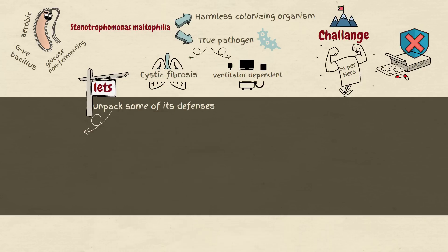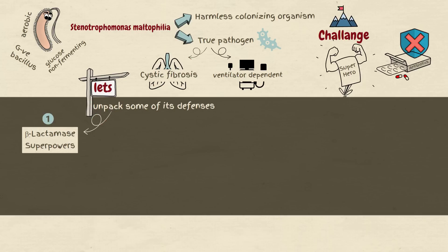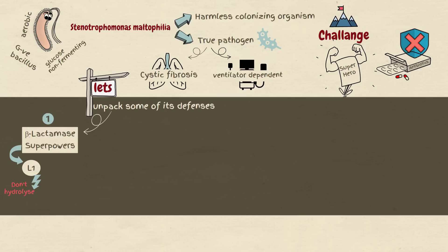Let's unpack some of its defenses. Beta-lactamase superpowers: this germ produces two special enzymes, L1 and L2. L1 is like a metal shield breaking down many antibiotics, except for one called aztreonam.